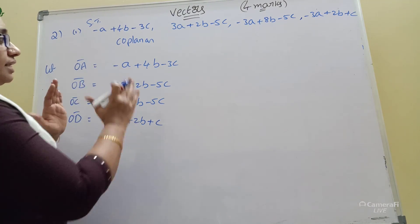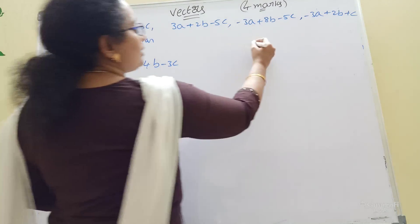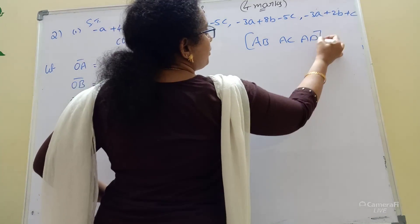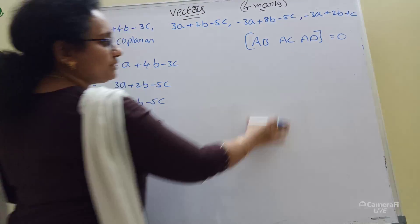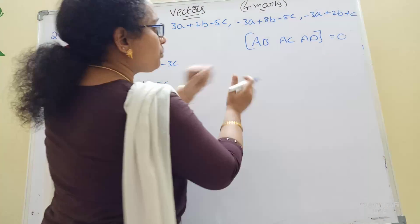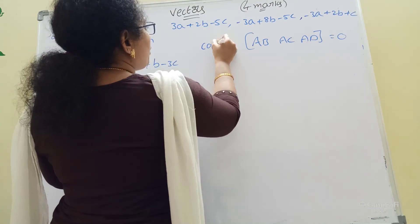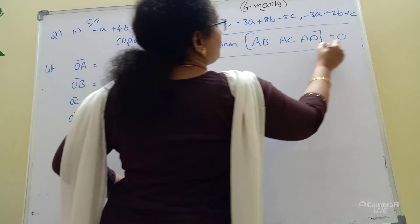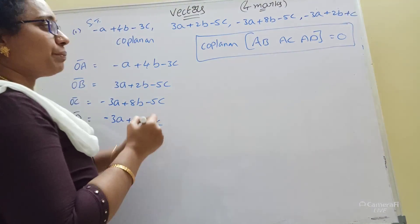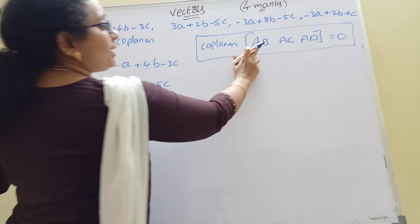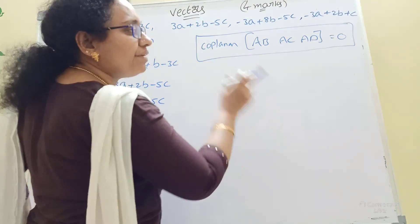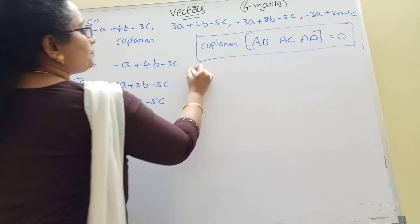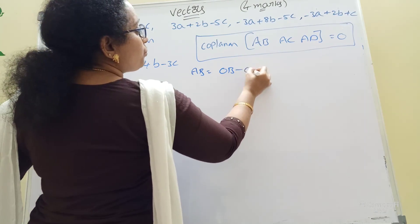Here is the problem. First go AB, AC, AD. The formula: AB equals OB minus OA.